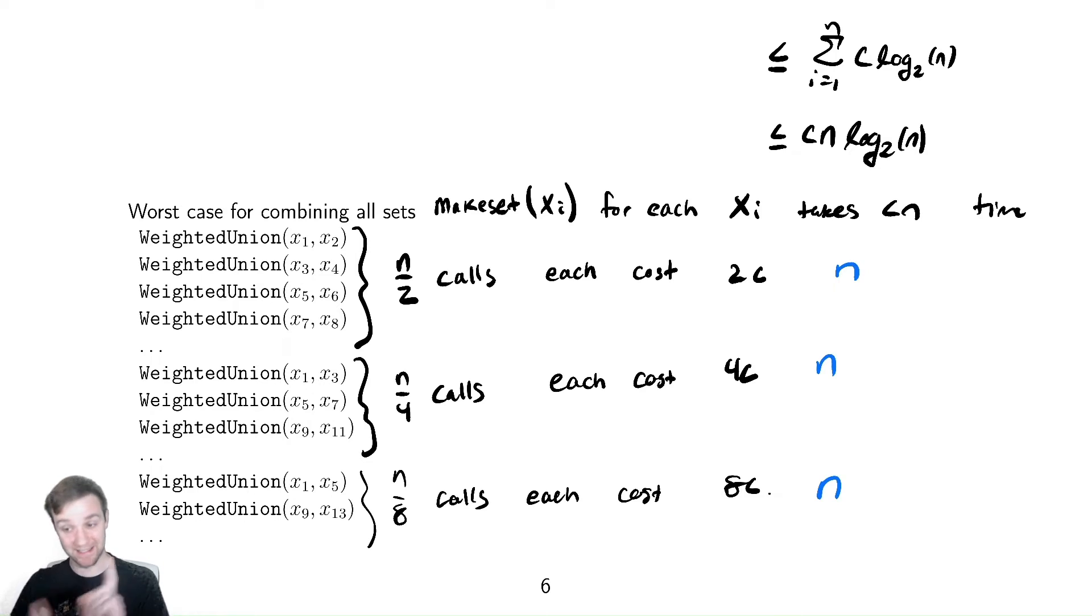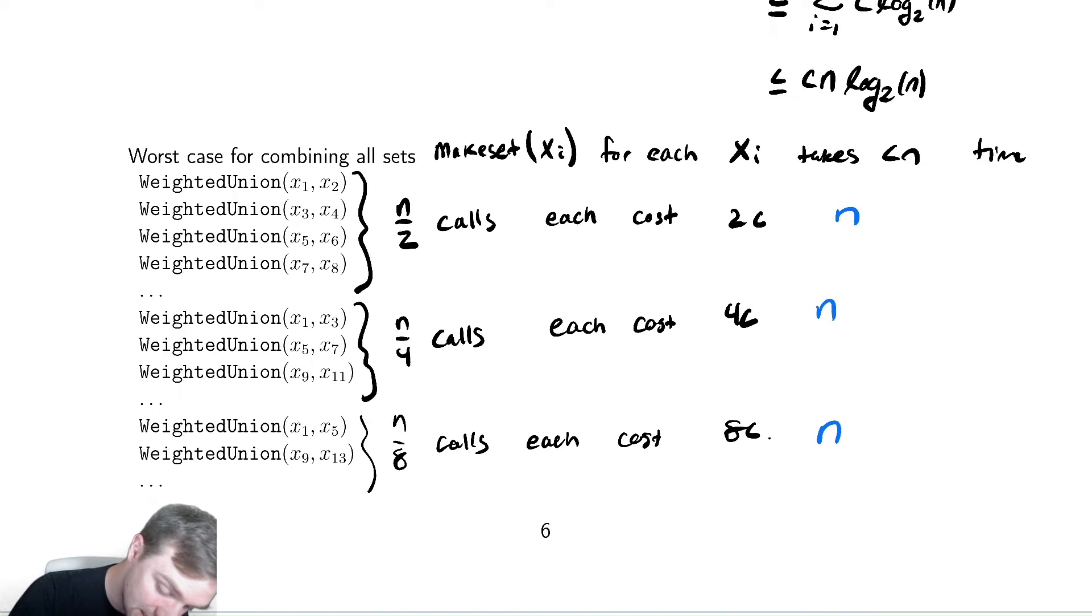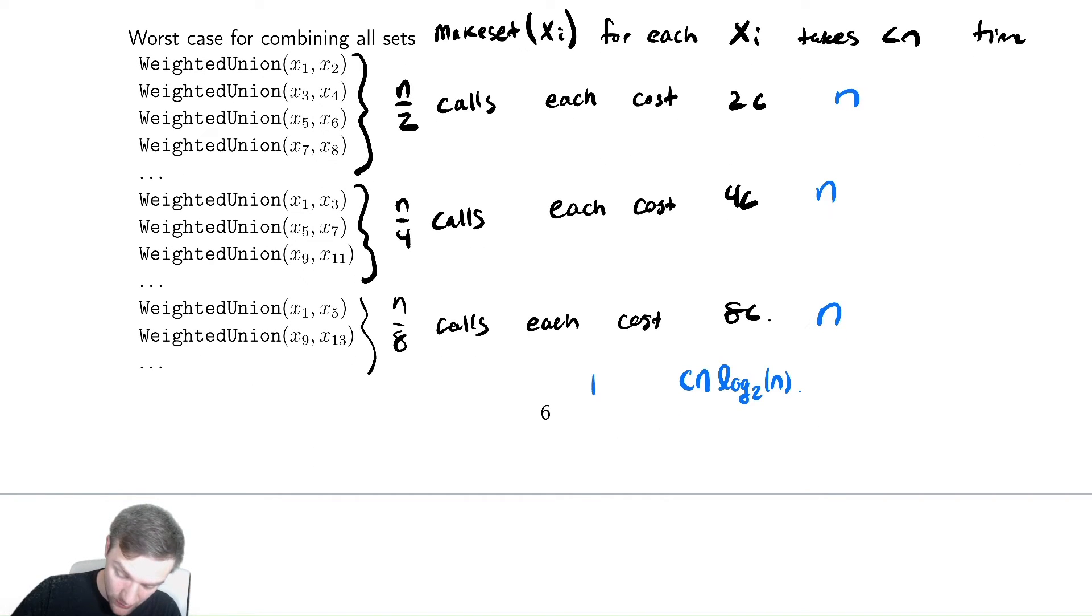How long does it take to keep doubling the size? We'd do that log base 2 of n times. So this is going to be cn log base 2 of n. Notice that our analysis here is actually just a strict equality. The cost of doing these weighted unions in the worst case is actually a strict equality that the runtime here is cn log n.